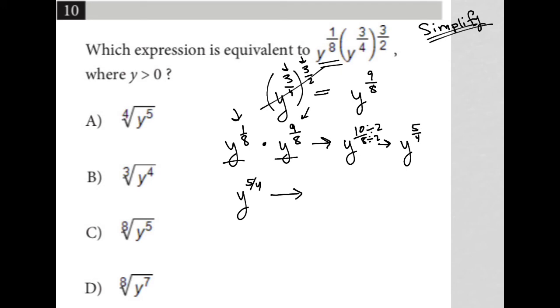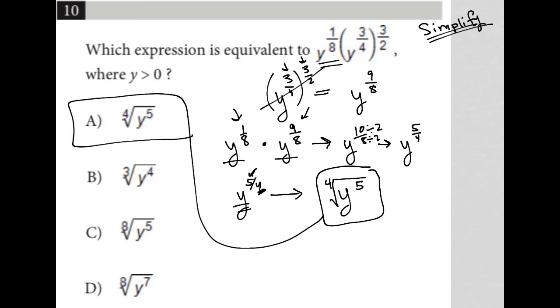The way that I do that is I take my base, which is y, and then I say, what type of radical will I have? It's always going to be the same as the denominator. So this is going to be a fourth root. And then the numerator just stays on as a power. So this would be fifth power. Our answer is a fourth root of y to the fifth power, and therefore the answer is choice A.